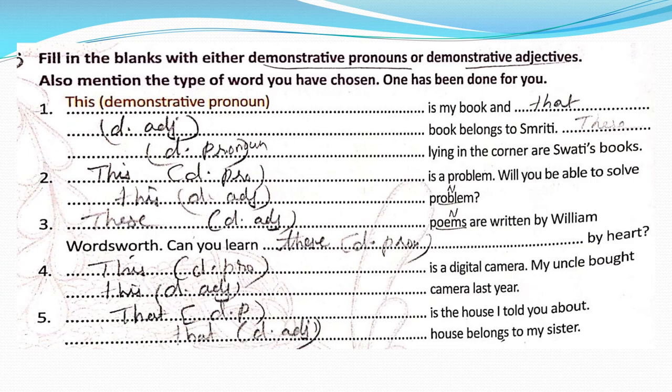The five interrogative pronouns are: what, which, who, whom, and whose. 'What' is used to ask questions about people or objects — for example, 'What do you want for dinner?' 'Which' is also used to ask questions about people or objects — for example, 'Which color do you prefer?'